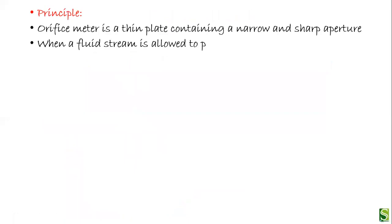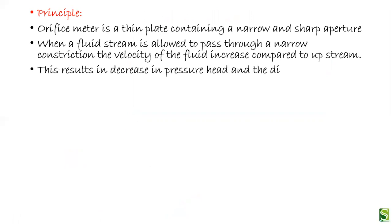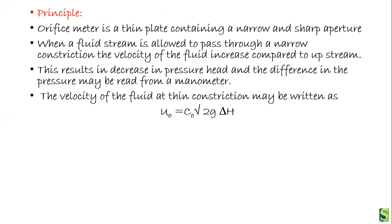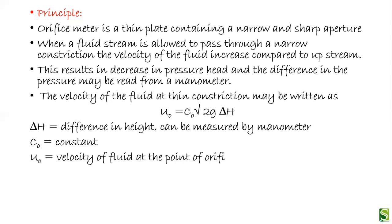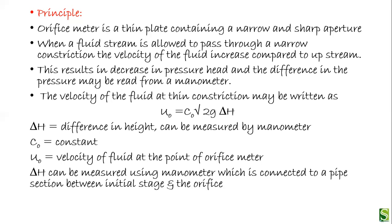The principle of the orifice meter: it is a thin plate containing a narrow and sharp aperture. When the fluid stream is allowed to pass through the narrow constriction, the velocity of the fluid increases compared to the upstream, resulting in a decrease in pressure head. The difference in pressure may be read from a manometer. The velocity at the constriction is written as μ₀ = C₀√(2g·Δh), where Δh is the difference in height measured using a manometer, C₀ is a constant, and μ₀ is the velocity at the orifice.